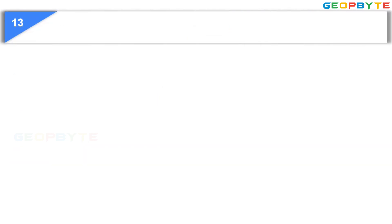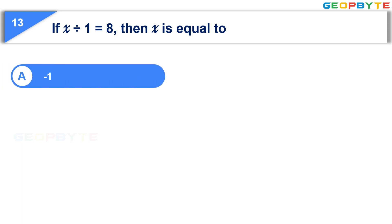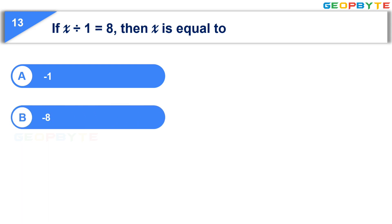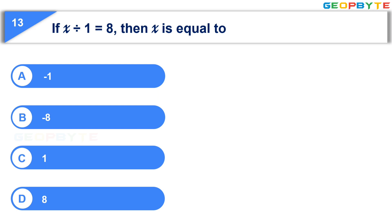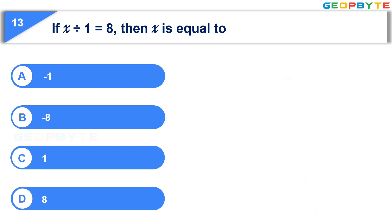The thirteenth question: If x divided by 1 is equal to 8, then x is equal to — Option A: minus 1. Option B: minus 8. Option C: 1. Option D: 8. Your time starts now. Your time is up. And the correct answer is Option D: 8.